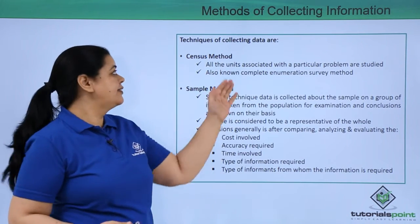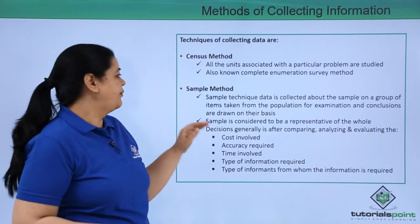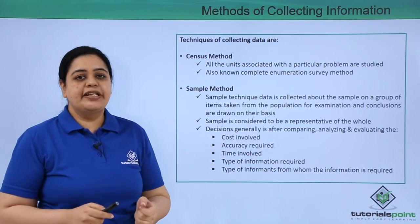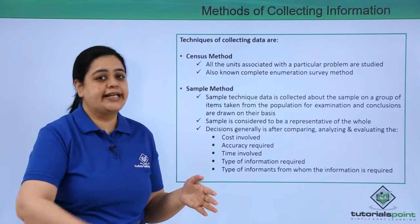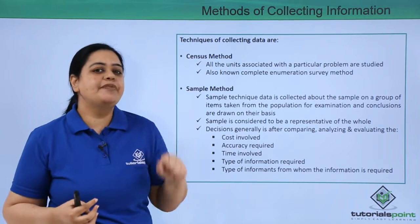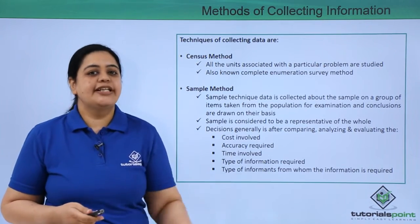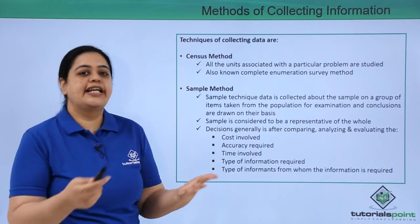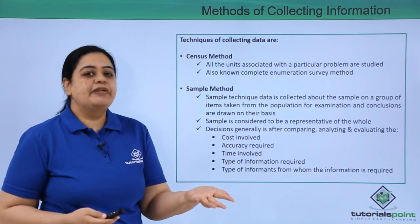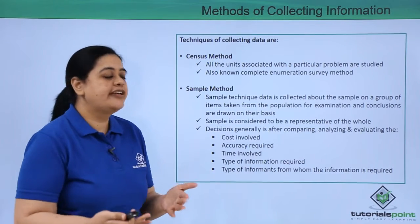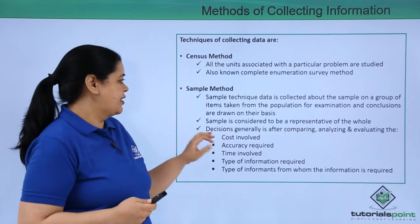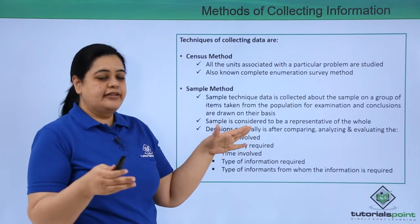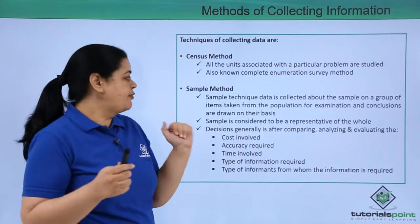The best example of this is when the government of India conducts the census on a 10-yearly basis. Now, the sample method — instead of surveying the entire population, a sample is collected, and based on the information from that sample, conclusions or publications are made.